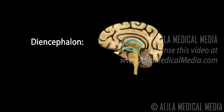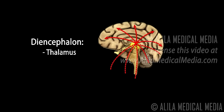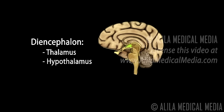On top of the brainstem, and sometimes classified as part of it, is the diencephalon. The main components of the diencephalon are the thalamus and hypothalamus. The thalamus serves as a gateway, relaying sensory signals originated throughout the body to the cerebral cortex. It is also involved in emotional and memory functions.